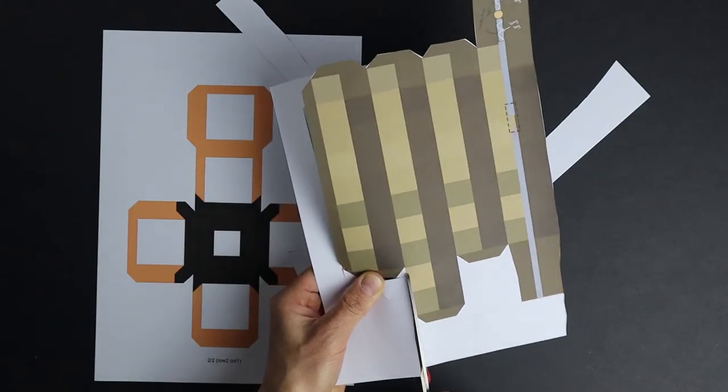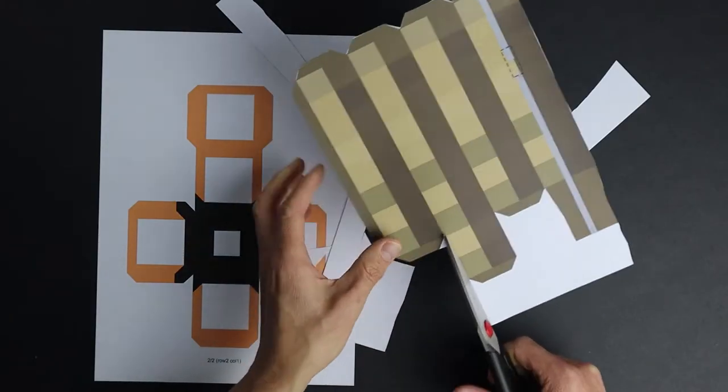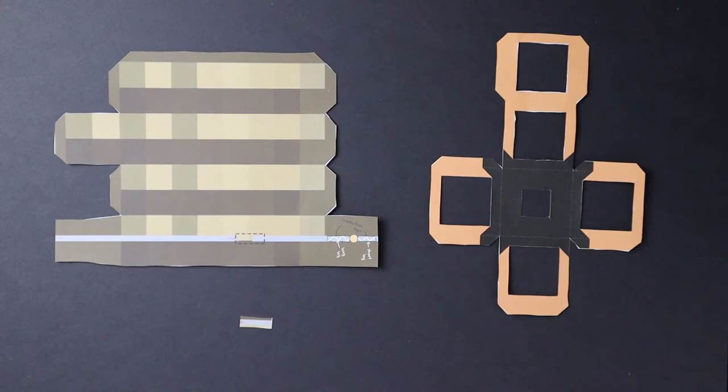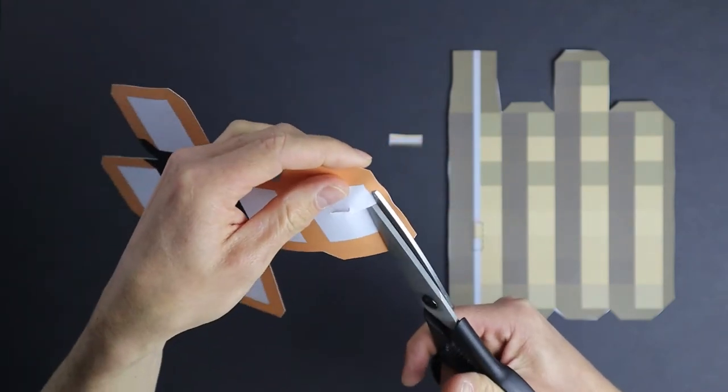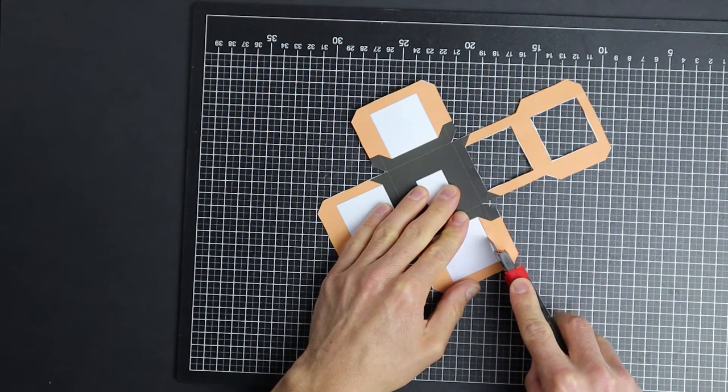Once you have printed the templates, start by cutting out the three parts: the handle, the light body, and the little rectangle for the on-off switch. For the holes, make a little cut and then cut around the hole, or you use a cutter knife.